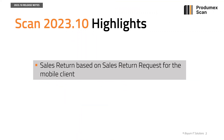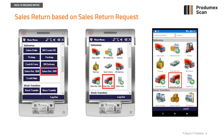In our video today we are going to discuss sales return based on return request for the mobile client. The new feature of Scan 2023.10 is the addition of return request based sales delivery, in addition to the existing delivery document number based one.